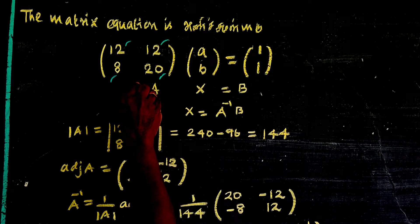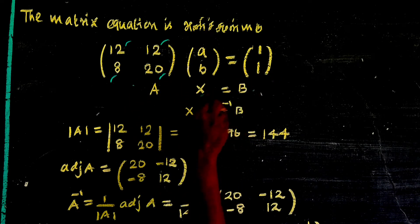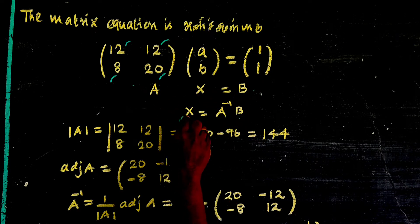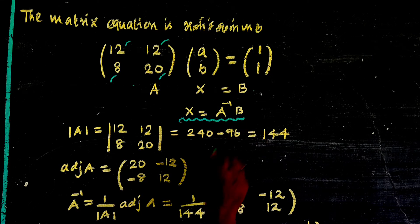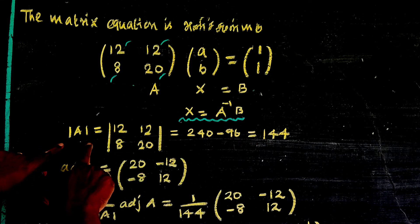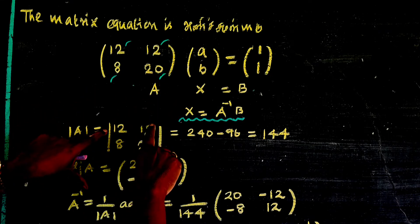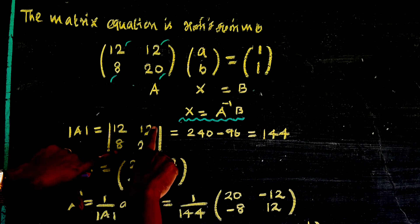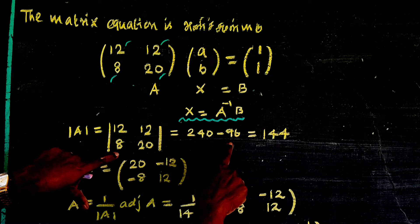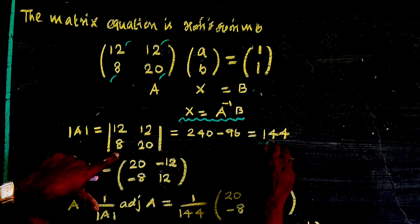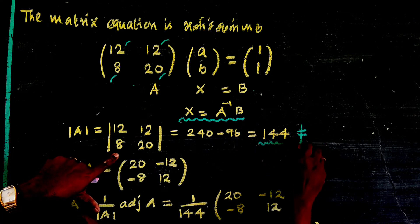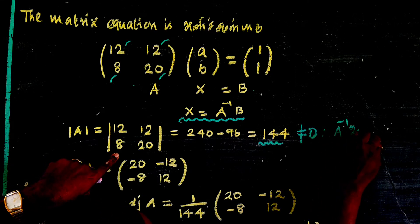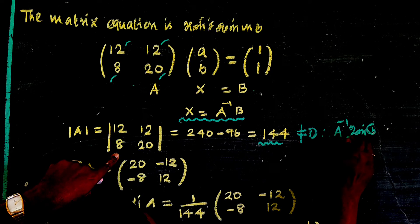We write X is equal to A inverse B. A inverse exists when the determinant of A is non-zero. The determinant value is 240 minus 96, which equals 144. Since this is not equal to zero, therefore A inverse exists.